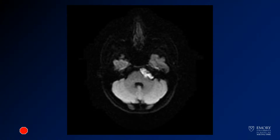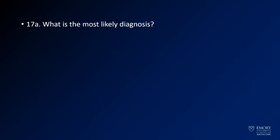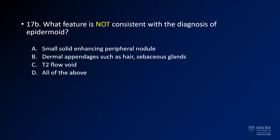Finally, we have a diffusion-weighted image through the same region. Here the abnormality sticks out nicely. So what is the most likely diagnosis? And what feature of this lesion would not be consistent with the diagnosis of epidermoid?